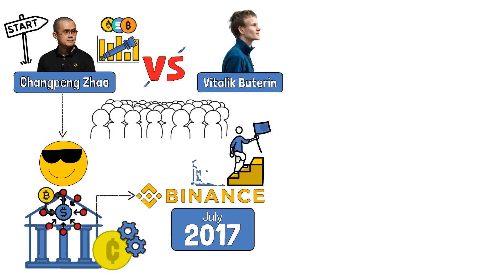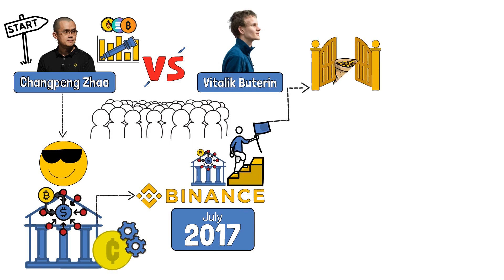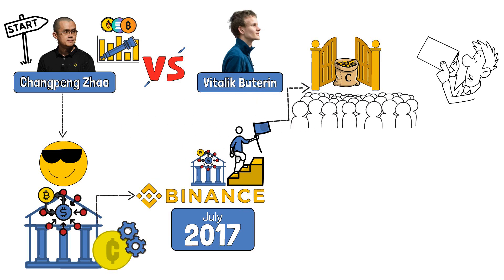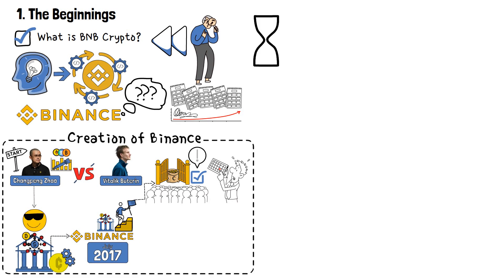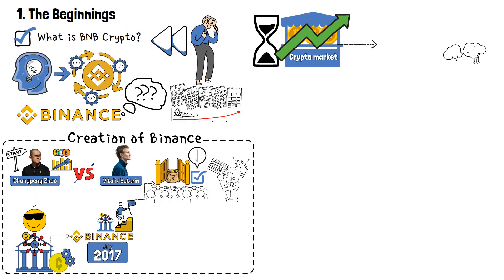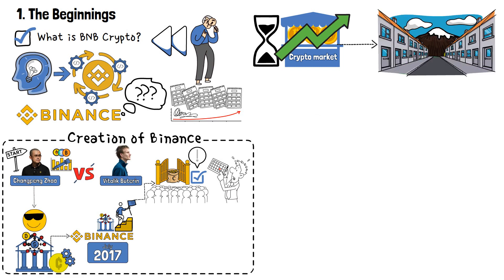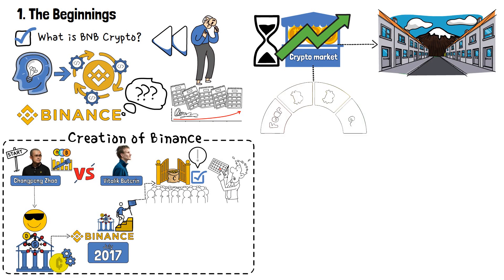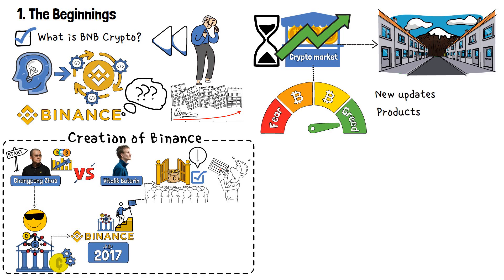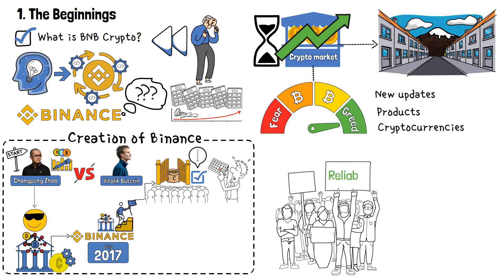Binance aimed to be more than just an exchange — it aimed to be a gateway to the world of cryptocurrencies for everyone. The creation of Binance came at a time when the crypto market was booming, but it was still a wild and rapidly developing industry. The overall market sentiment was that of optimistic chaos. Users were in desperate need of a reliable and efficient platform to trade their digital assets, and Binance positioned themselves as exactly that.